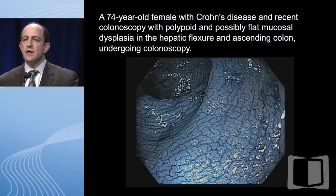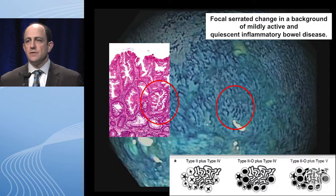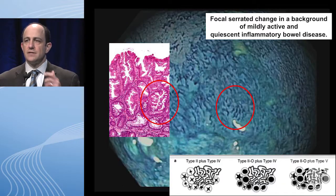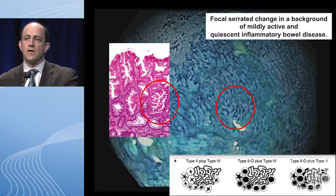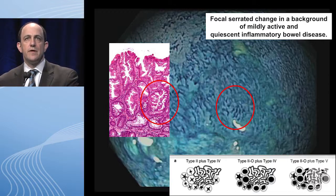A 74 year old female with Crohn's and recent colonoscopy showing polypoid and possibly flat mucosal dysplasia in the hepatic flexure and ascending colon underwent colonoscopy. The area looked fine and we documented the ileum, but she had this lesion which in fact was a focal serrated change in a background of mildly active IBD. I wanted to mention that we can even identify serrated changes in some of these patients. The actual prognosis of serrated changes in the IBD population is somewhat in doubt, although there's some evidence to suggest these patients do have a higher risk of standard dysplasia. Look at how nicely the serrated biopsy appearance can line up with what you can see on careful exam.